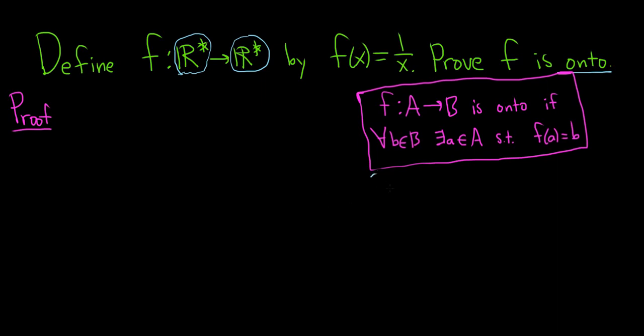To figure out the proof, we basically have to work backwards, so scratch work. We have to start with f of a equal to b. So we have to figure out what is a. So f of a is simply 1 over a, and b is just b.